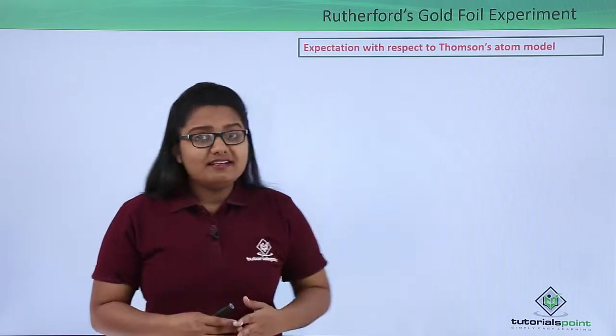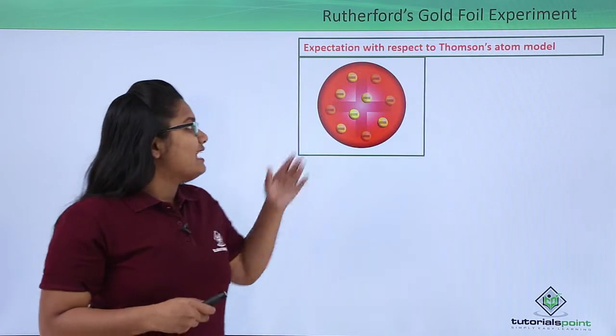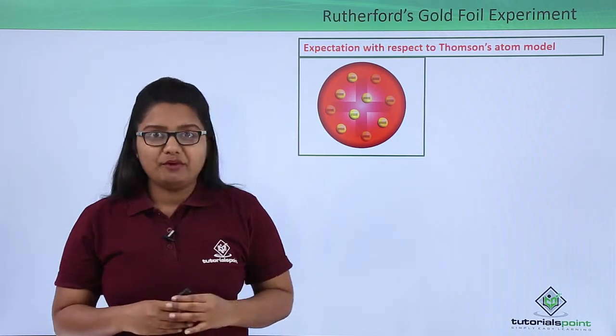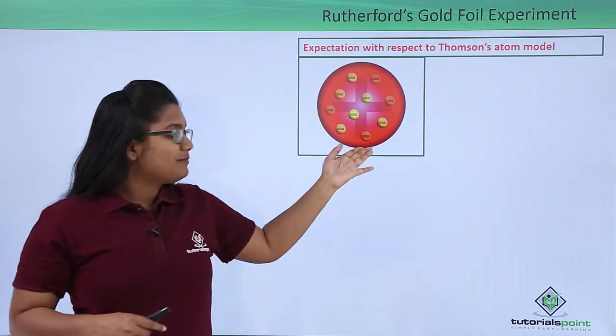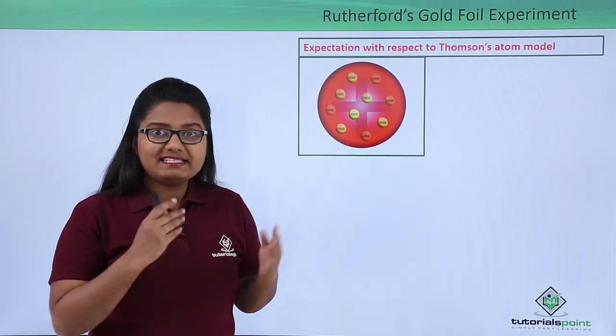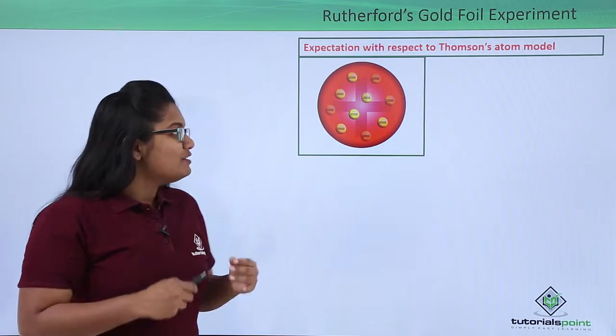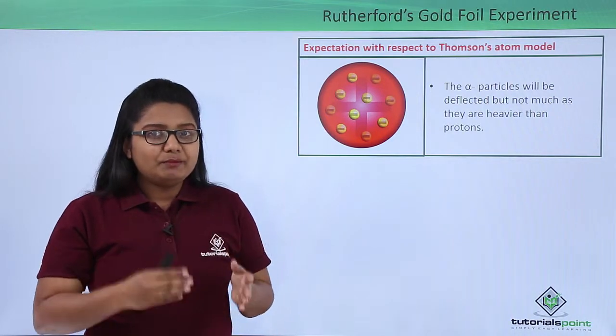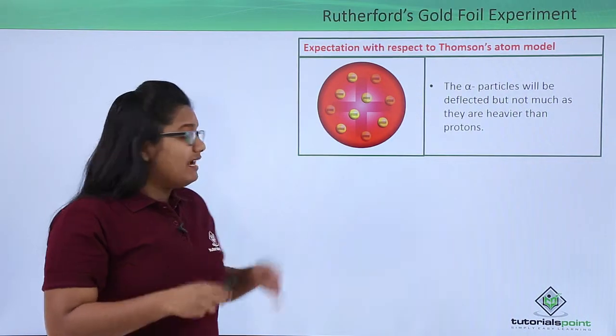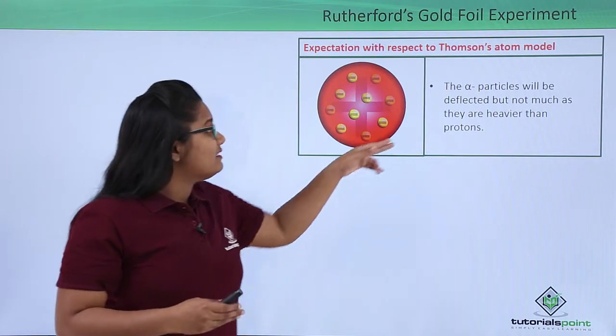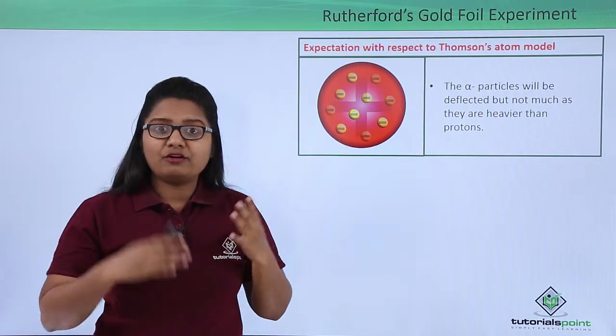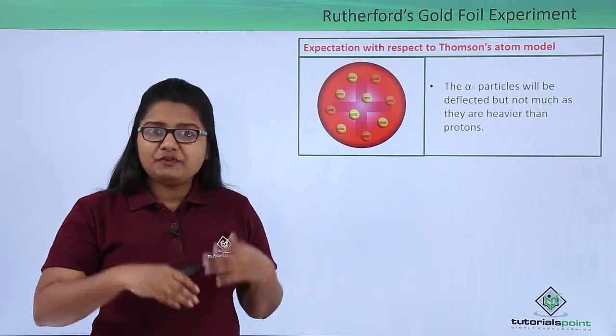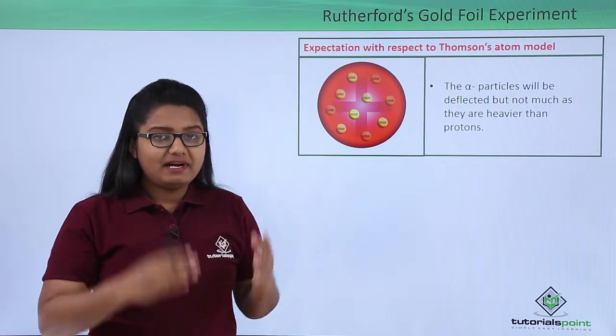The atomic model accepted at that time was Thomson's atomic model, also known as the plum pudding model. It had a positively charged sphere with negatively charged electrons studded onto it. Rutherford expected that all alpha particles moving towards the foil would be deflected from their paths, because the positively charged sphere and positively charged alpha particles would repel each other.